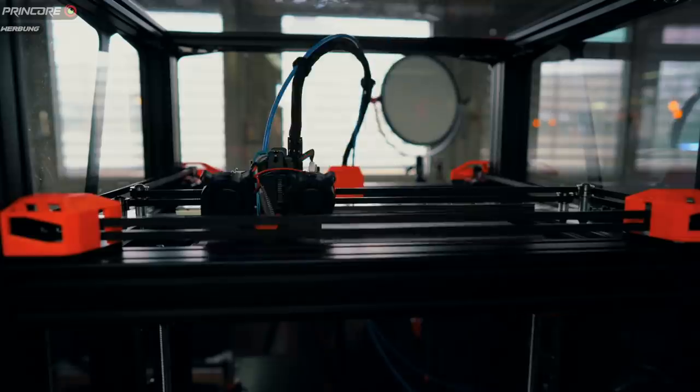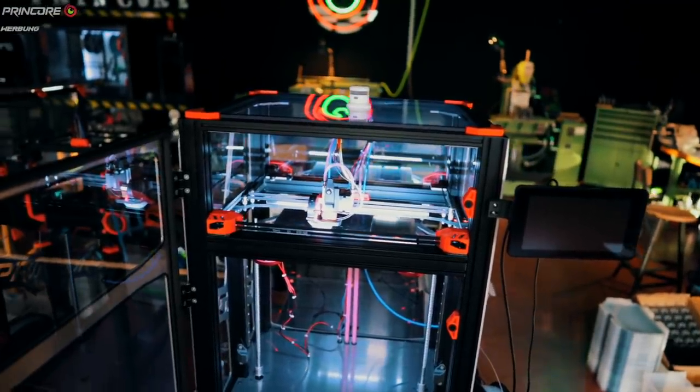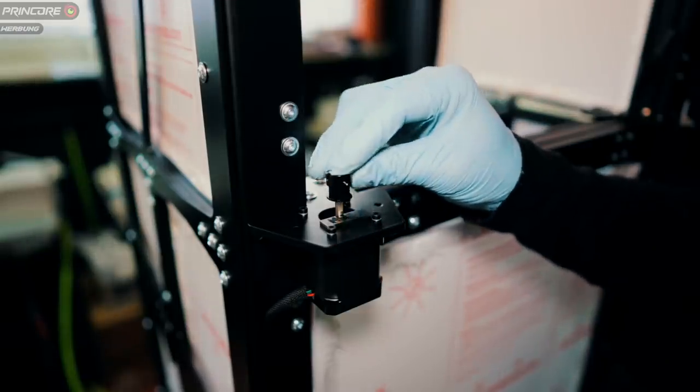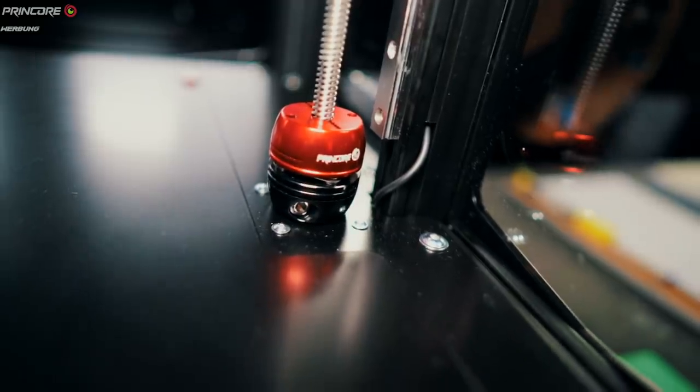Im Bauraum wird es warm, vor allem spätestens wenn mit ABS, PA oder sogar PC gedruckt wird. Um die Wärme möglichst fern von den Schrittmotoren zu halten, sind diese für X und Y hinten am Druckergehäuse bzw. für Z im Inneren des Elektronikgehäuses angebracht. Die Schrittmotoren bleiben stets kühl und Schrittverluste werden ausgeschlossen.